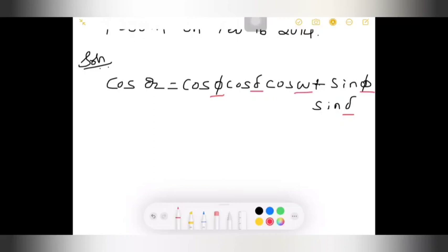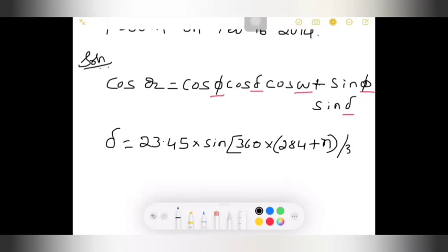I need to find phi, delta, and w. First, I will write the formula for delta now. Delta, that is nothing but my declination angle, is equal to 23.45 times sin of 360 times 284 plus small n.